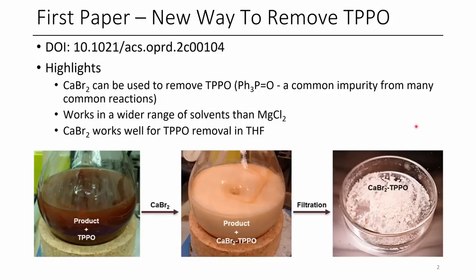The first paper for this month is a new way to remove triphenylphosphine oxide. It was recently reported that you could use zinc chloride to remove triphenylphosphine oxide; however, in this paper the authors use calcium bromide. The lab they worked in had also used magnesium chloride, but they found that when trying to remove the TPPO in THF, it didn't work.